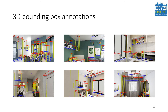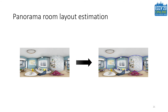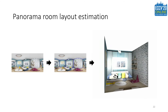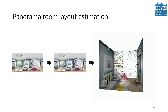Our dataset also provides 3D bounding box annotations in all scenes. To showcase the usefulness and uniqueness of the proposed dataset, we use it to train deep neural networks for room layout estimation, a representative task in holistic 3D scene understanding which aims to reconstruct the enclosing structure of the indoor scene. Based on the 2D layout prediction, we can further reconstruct the 3D models.